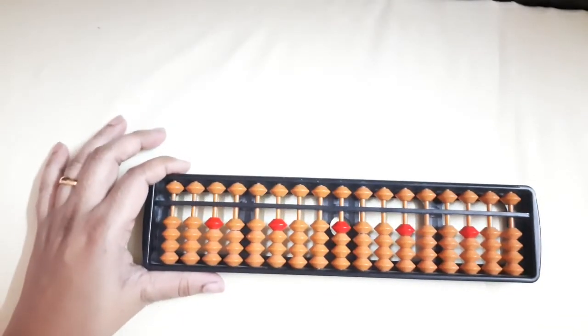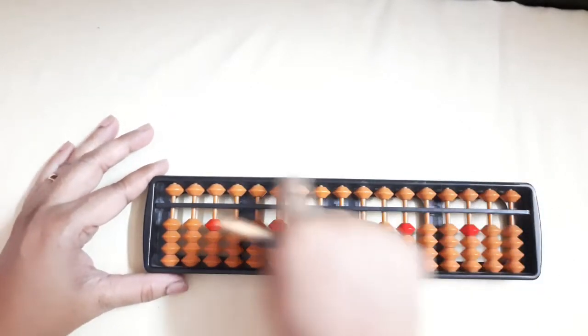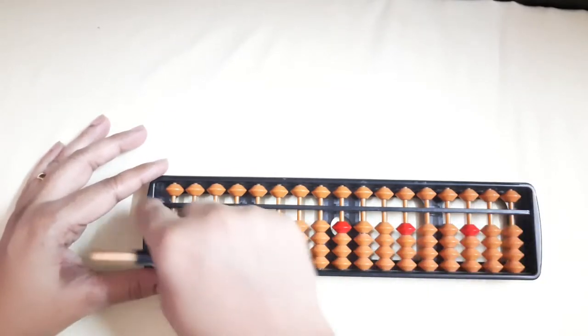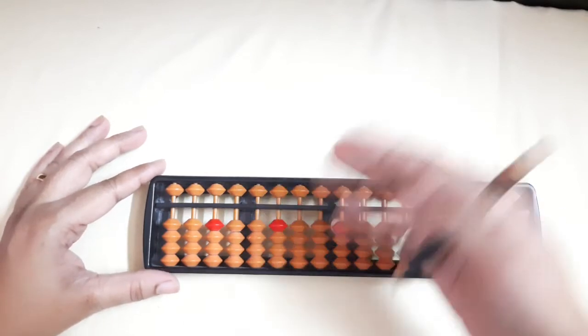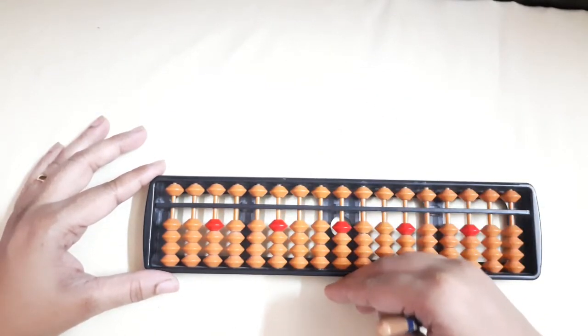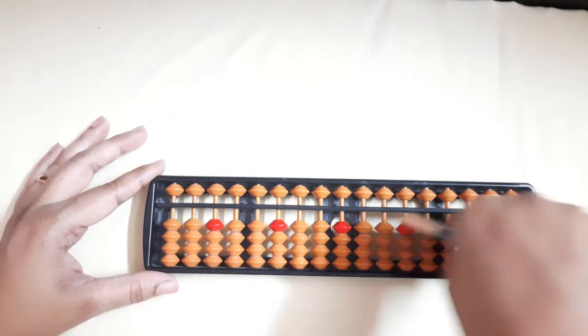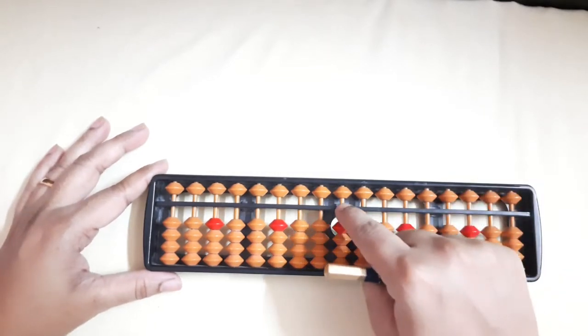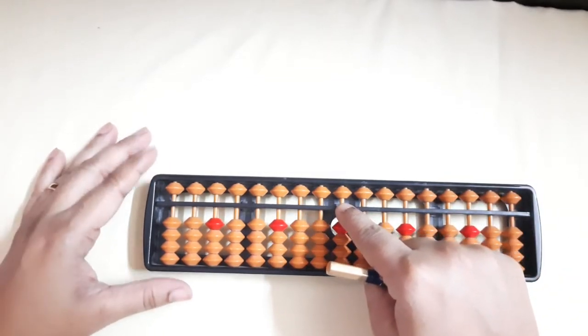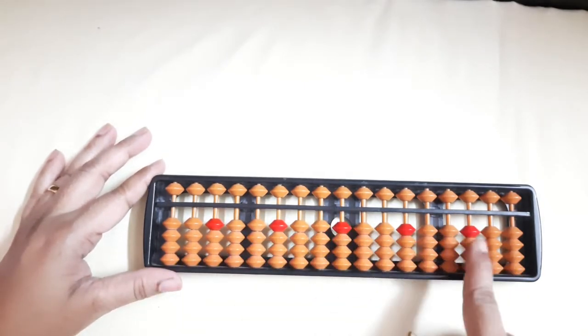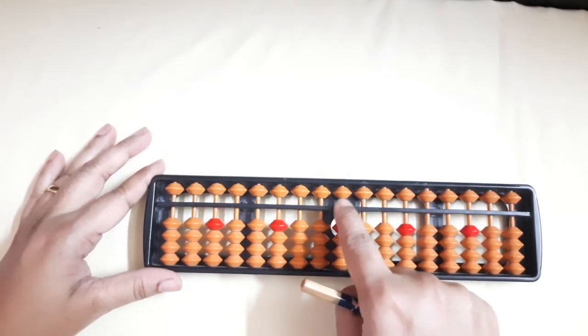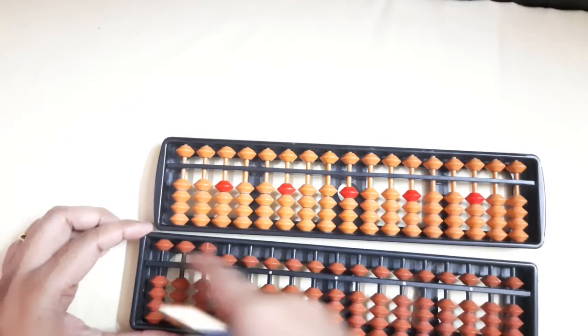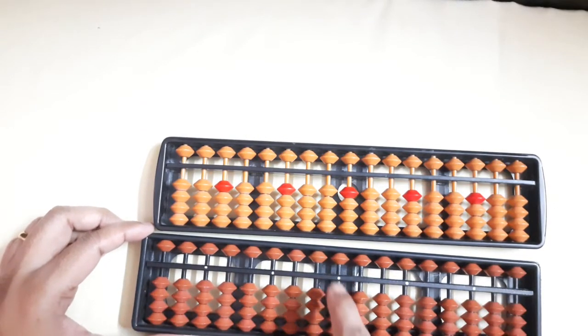Now this is the Abacus and this is the frame of the Abacus. This is the center bar which divides upper beads and lower beads and the rods moving right to left and left to right. Now this is the center point. You can see your 5 red beads. So you will be starting from the center, or if you are having this type of Abacus, you will start from the center white dot.